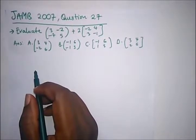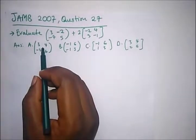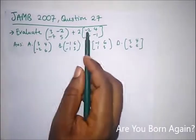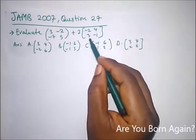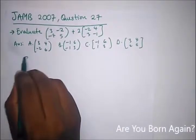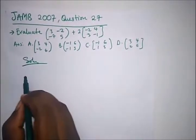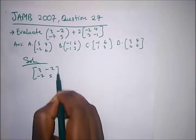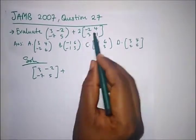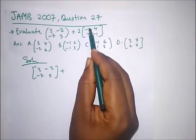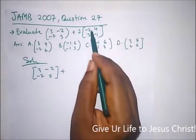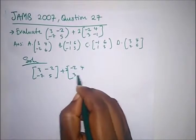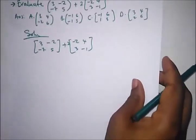It says evaluate this matrix: three, minus two, minus seven, and five — plus two brackets: minus two, four, three, and minus one. So we have here three, minus two, minus seven, and five. Now this is a scalar multiplication, so we just multiply two to every element in this particular bracket. Let's write this down.